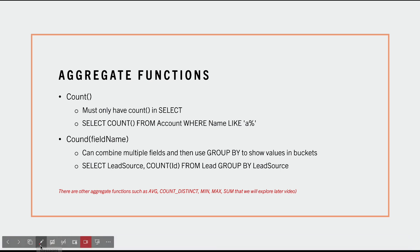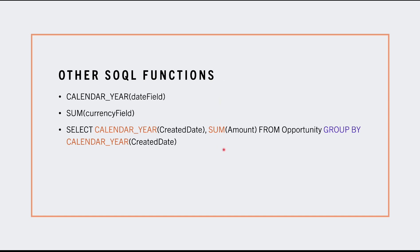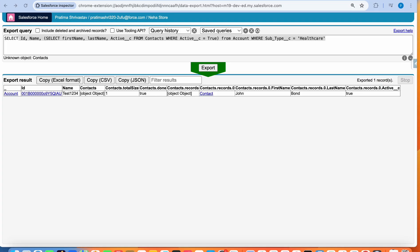Another date tip: you can also format date output. When you query Created Date in SOQL you get results with a bunch of 'Z's at the end. You can use functions like CALENDAR_YEAR or FORMAT to get the data in a more readable format. FORMAT(CreatedDate) will format it based on your timezone preference — much more human-readable than the default format.